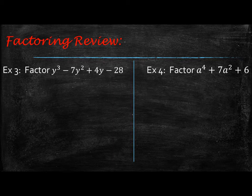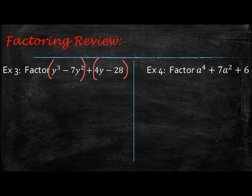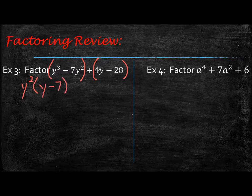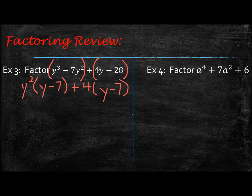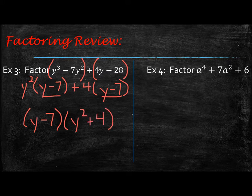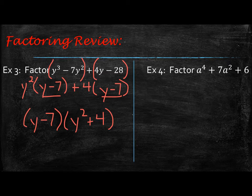Next: y³ - 7y² + 4y - 28. When you see four terms, immediately group the first two and the last two, then look for a common factor. In the first group, divide out y², leaving (y - 7). In the second group, divide out 4, leaving (y - 7). The parentheses match, so the first factor is (y - 7) and the second is (y² + 4). Since y² + 4 is a sum of squares, it can't be factored further. This is the final answer.